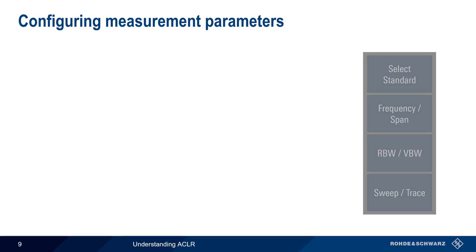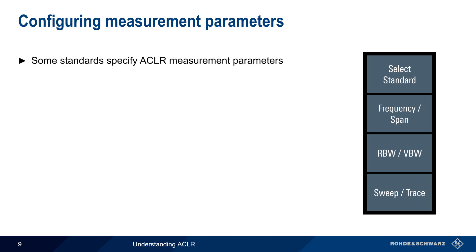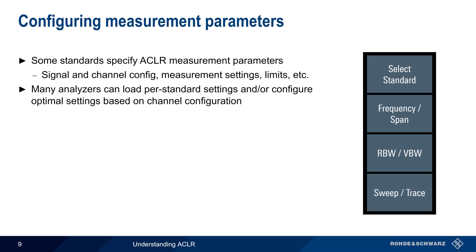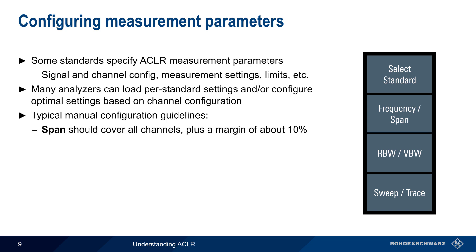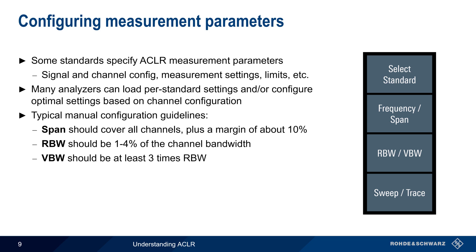With regard to configuring ACLR measurements, recall that some wireless communication standards specify measurement parameters — that is the signal and channel configuration, measurement settings, limits, etc. Some analyzers allow settings to be configured by loading a standard or setup file, and/or they can automatically configure optimal settings based on the user-defined channel configuration. If manual configuration is required, there are some standard guidelines: span should be set wide enough to cover all channels plus an additional recommended margin of 10%. Resolution bandwidth involves a trade-off between speed and accuracy, and for ACLR measurements should be set to 1 to 4% of the channel bandwidth. Video bandwidth should be set to at least 3 times the resolution bandwidth. And since ACLR is a power measurement, the RMS detector should also be used.